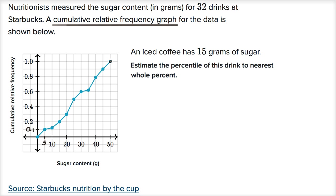This data point tells us that 100 percent of the drinks at Starbucks has 50 grams of sugar or less. The cumulative relative frequency — for each of these points we say this is the frequency that has that much sugar or less, and that's why it just keeps on increasing. As we add more sugar, we're going to see a larger proportion or larger relative frequency has that much sugar or less.